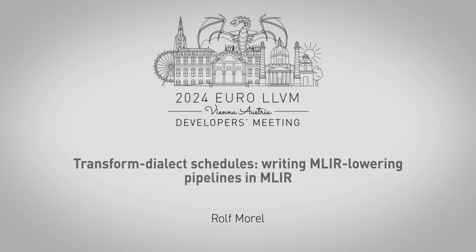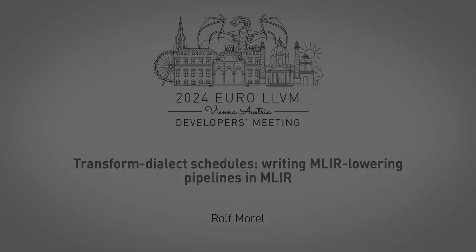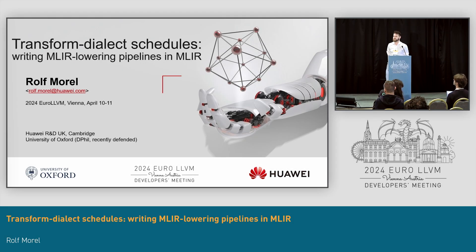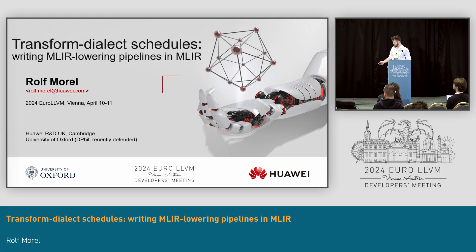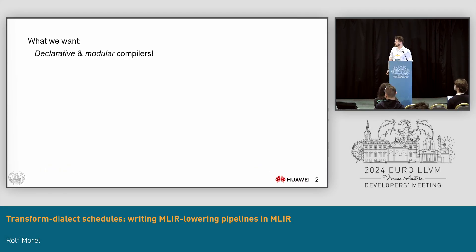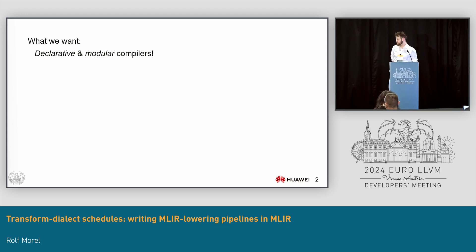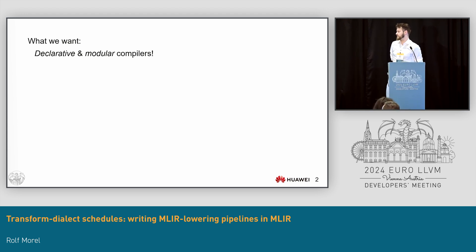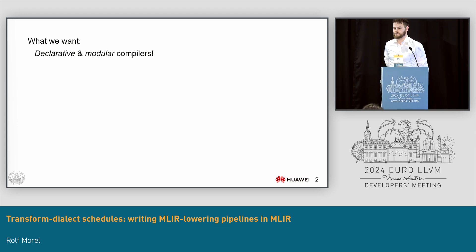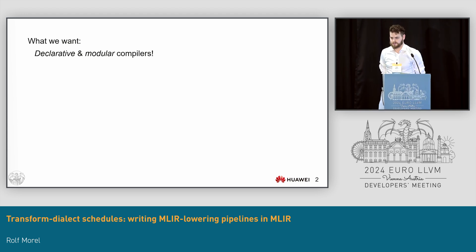My name is Rolf, and I will be telling you something about the work we've been doing at Huawei, and in particular the compiler lab in Cambridge. The thing that we want — at least in Cambridge — is declarative and modular compilers.